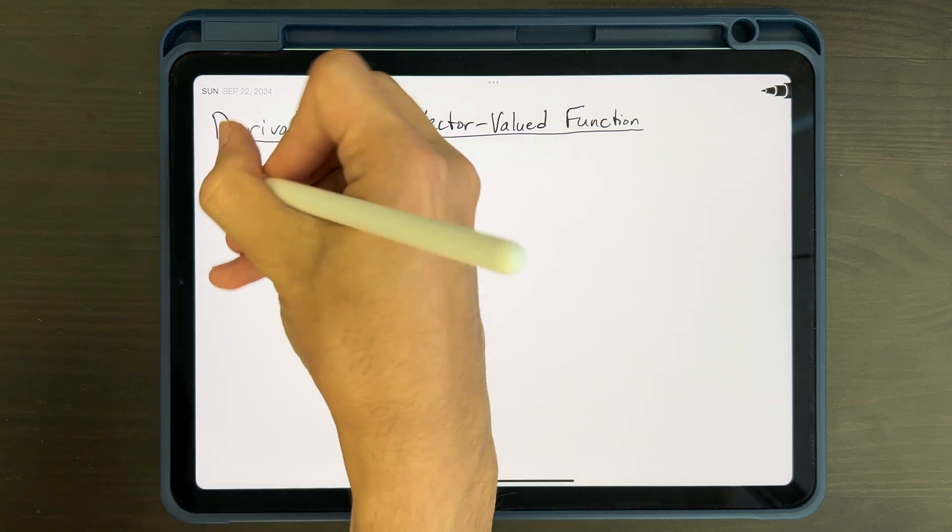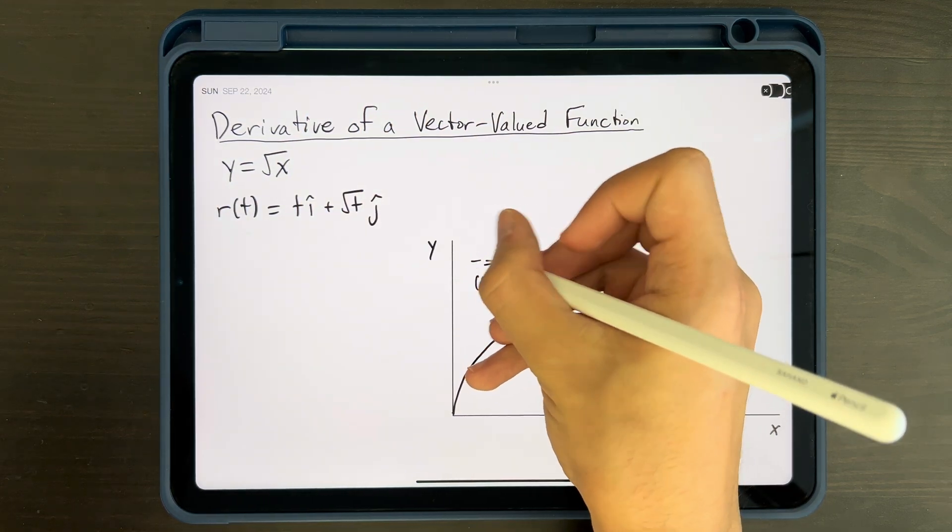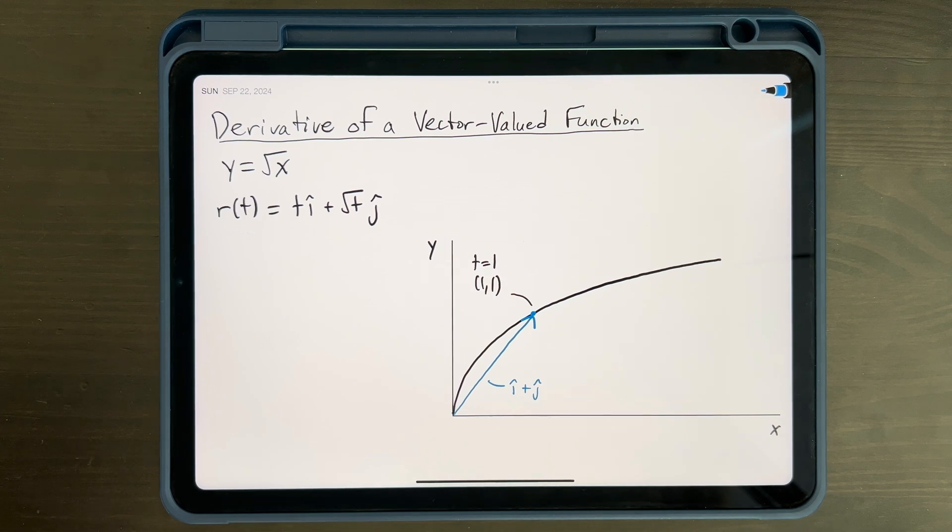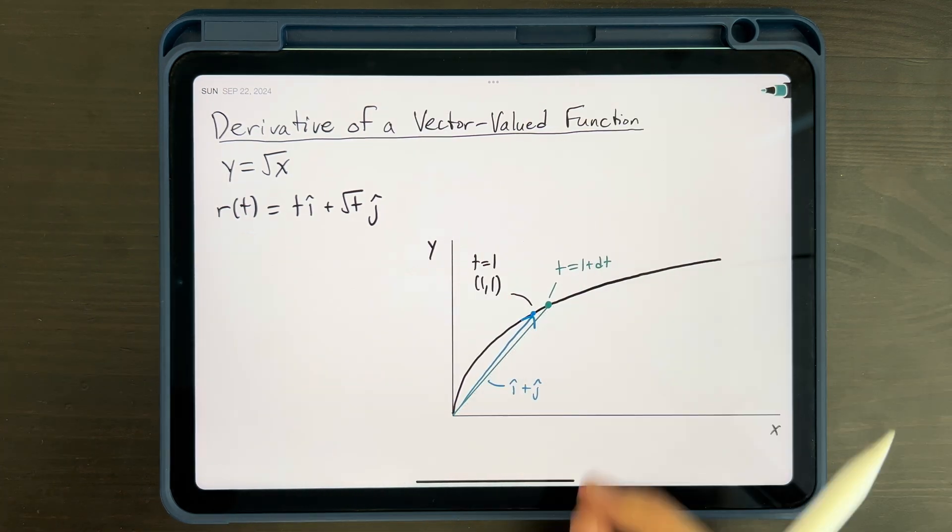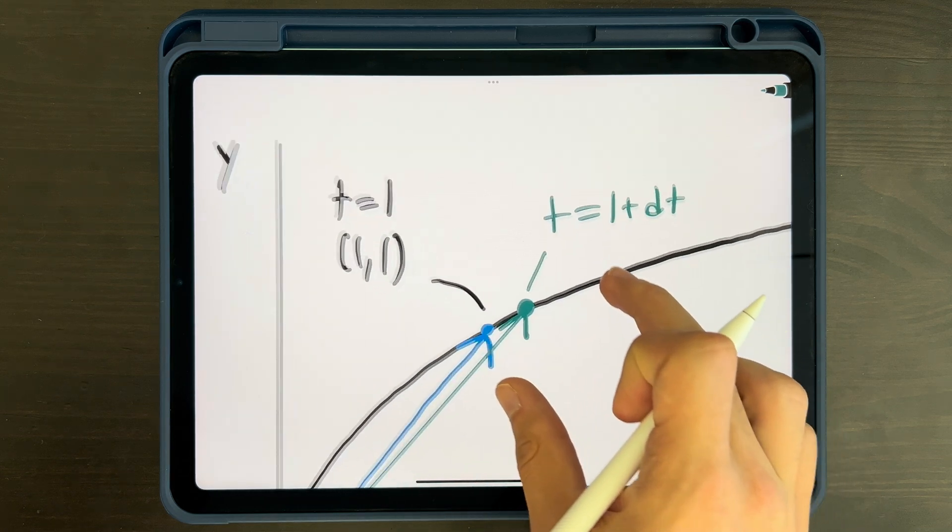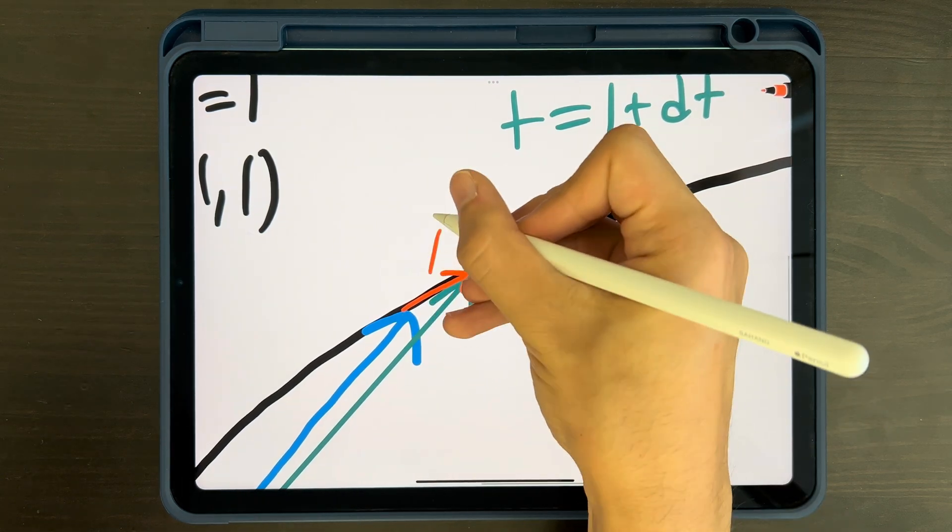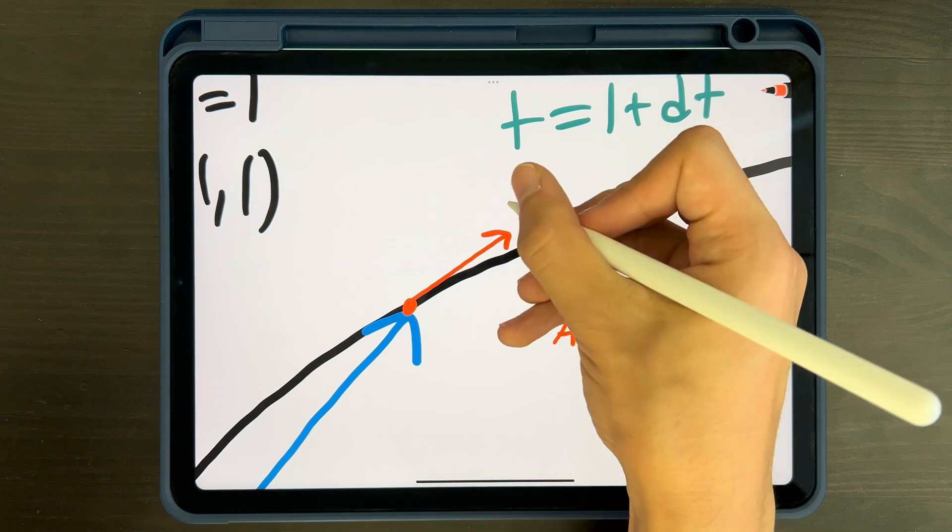While it's true that the derivative of a VVF is still a VVF, at least when we write it out, conceptually it means something a little bit different. Let's think carefully about what the derivative of a VVF is telling us. To demonstrate, we'll use the curve y equals square root of x, which we can parameterize as r of t equals t i-hat plus square root t j-hat. At the point t equals 1, our VVF draws a vector pointing to the point 1 comma 1, and that vector is i-hat plus j-hat. Now let's move to the point t equals 1 plus dt, where dt is very very small. So we move a very small step along this curve. We got to this new point by drawing a new, slightly different vector from the origin. Now what does the derivative of the VVF tell us? It tells us how much this vector changes when we go from 1 to 1 plus dt.